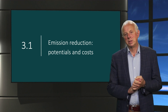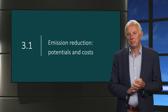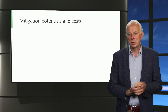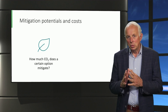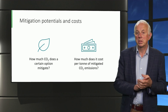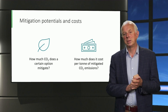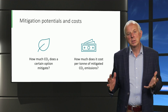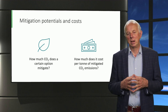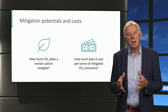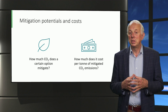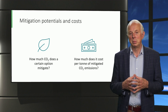We have two main questions we will aim to answer. Whenever discussing mitigation options we can ask ourselves: how much CO2 does a certain option mitigate, and second, how much does it cost per ton of mitigated CO2 emissions? These are two important questions, but they are not the only ones relevant. In a later video we will come back to other elements that also play a role in the decision-making process when discussing mitigation.